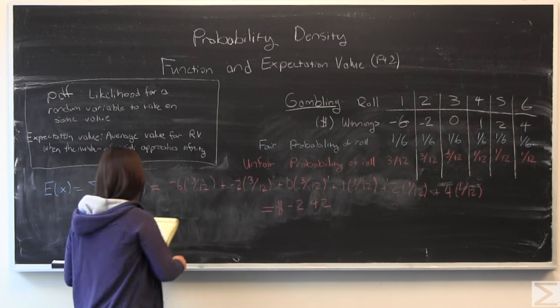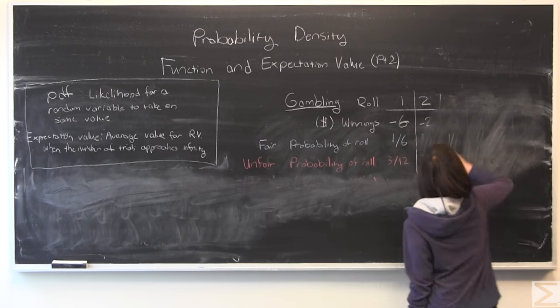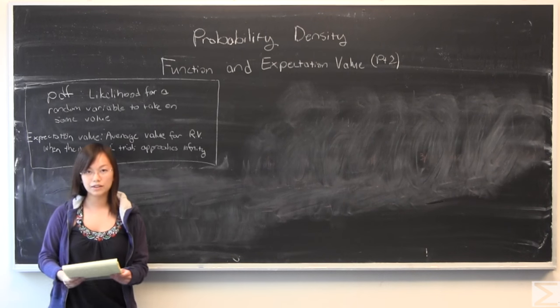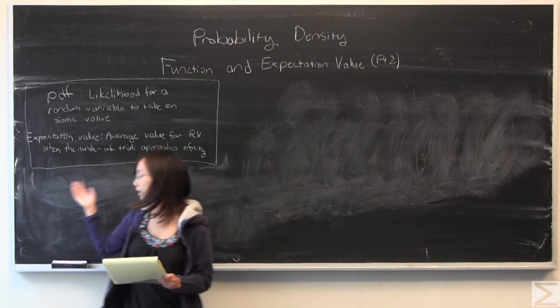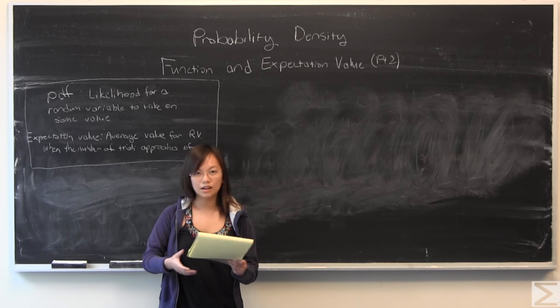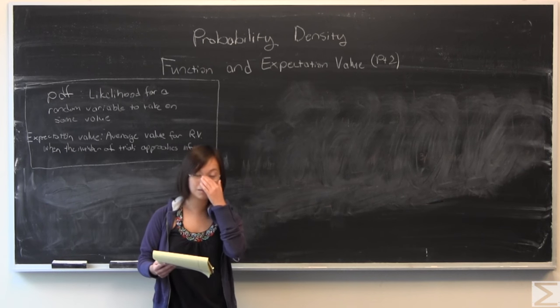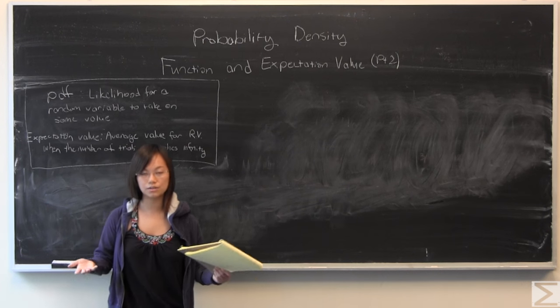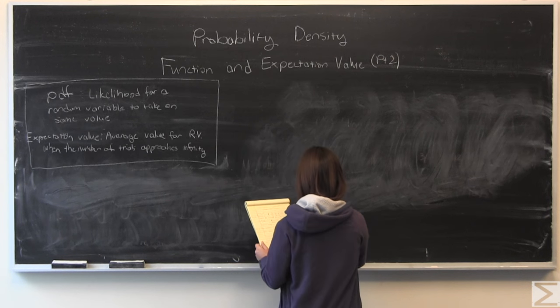That's the example of discrete expectation value. For the next part, I'm going to be giving you an example of continuous random variable expectation values. We're going to say some company has a plant, and they give you a probability density function for how tall it is expected to grow after 10 days, assuming you raised it correctly and didn't kill it.